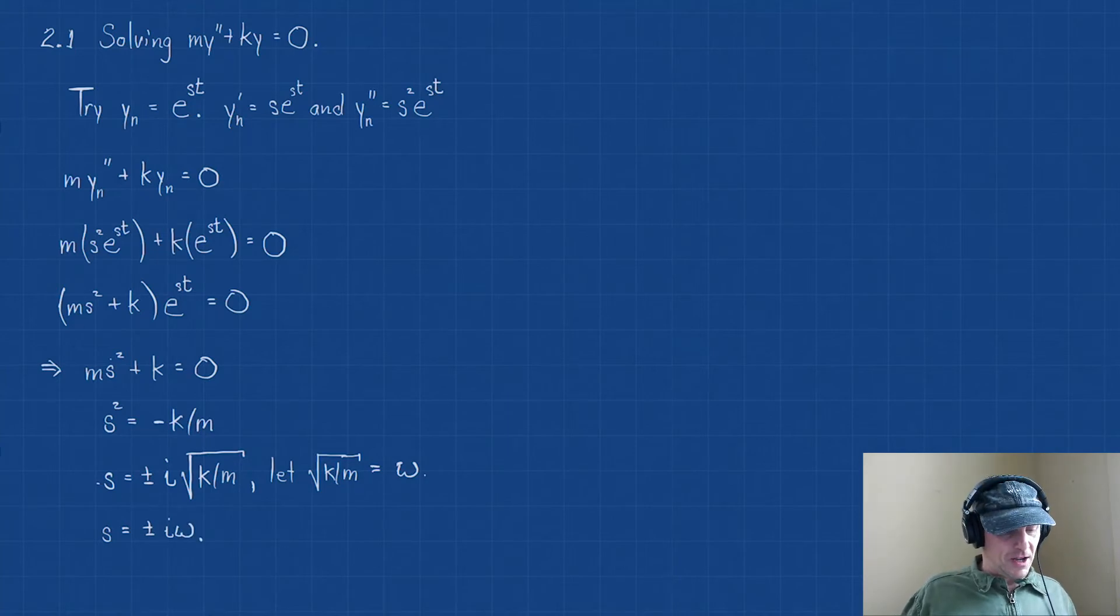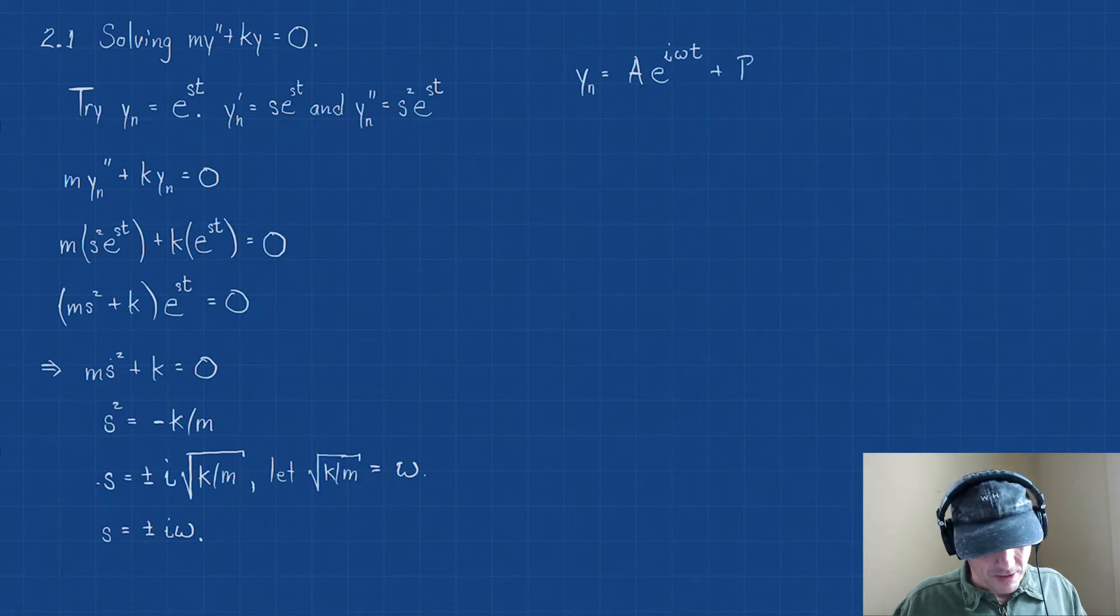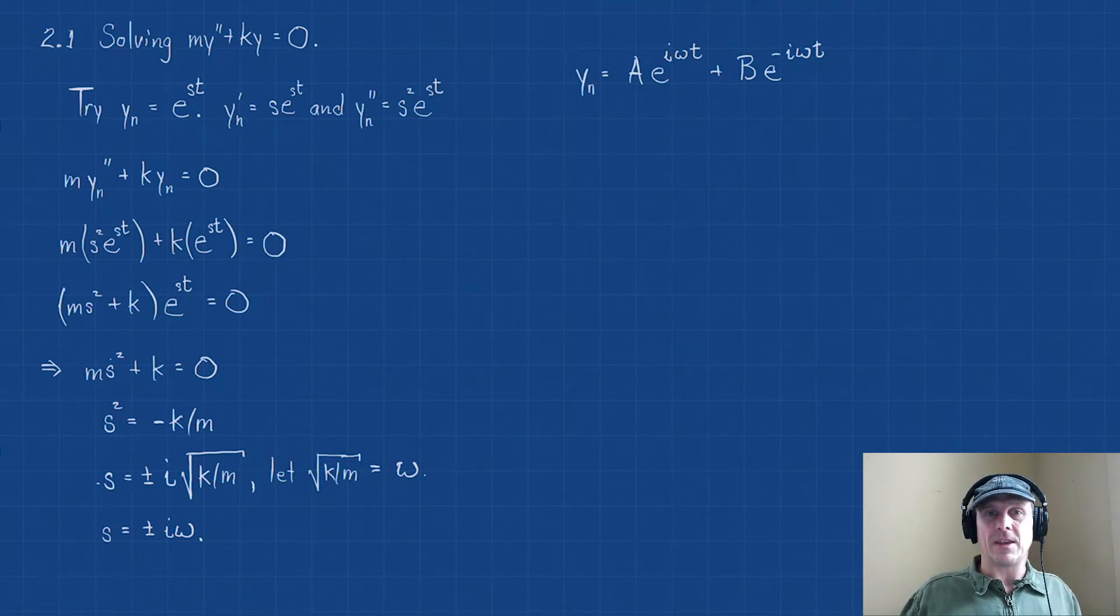Well, let's write out our solution. Notice there's two solutions. So our null solution, what this is telling me is my null solution is going to be some constant, we'll call it a, times e^(iωt) plus some other constant b times e^(-iωt). Now, remember that the a and b, those are just some constants, and we've already shown that constants do not affect the null solution, that those constants will be determined based on some initial conditions for the problem.